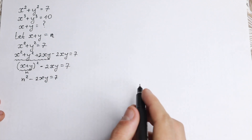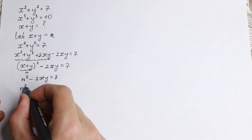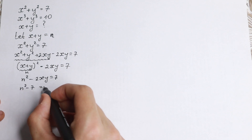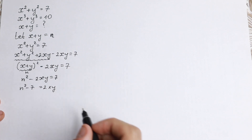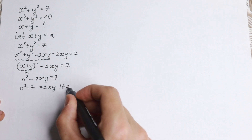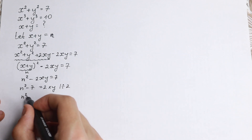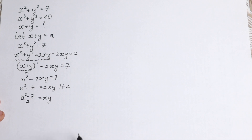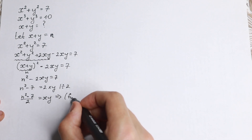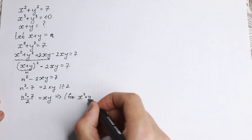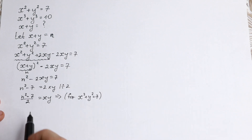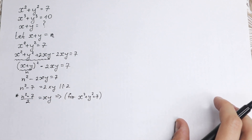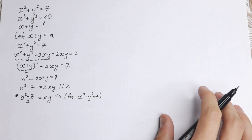We can simplify this: n squared minus 7 equals 2xy, and dividing both sides by 2 gives us n squared minus 7 over 2 equals xy. This is our first expression, and it comes from x squared plus y squared equals 7.